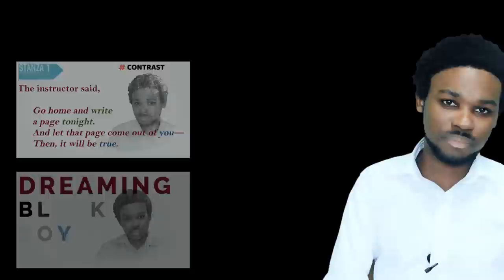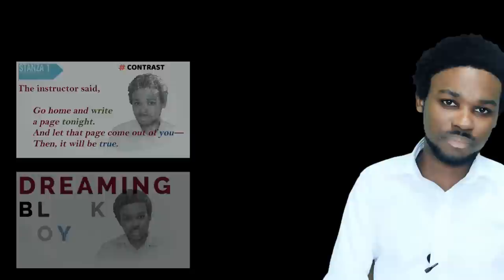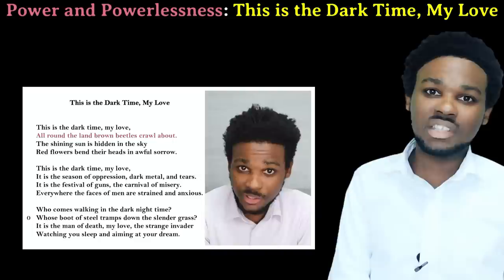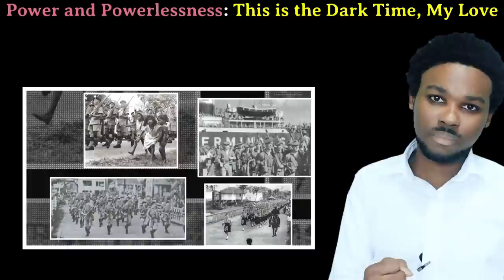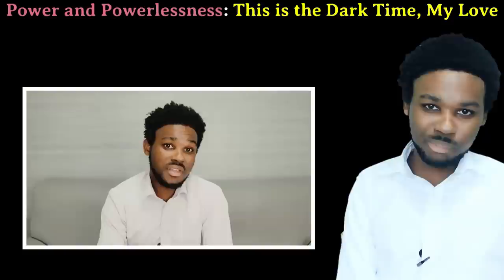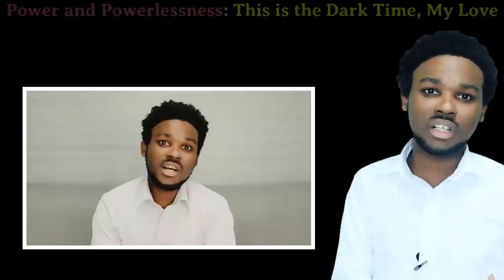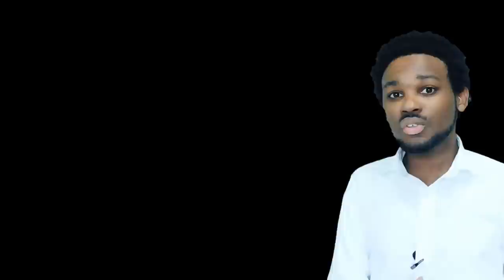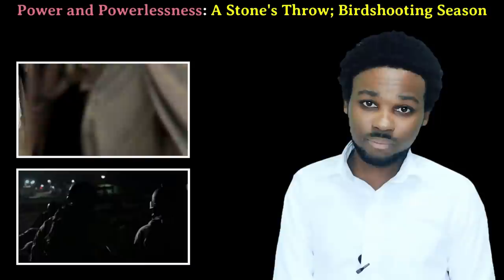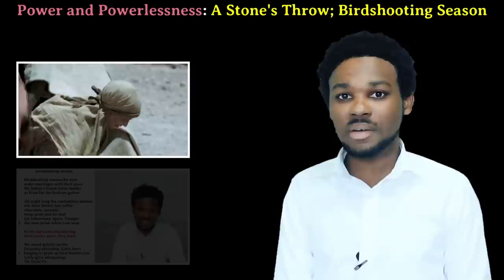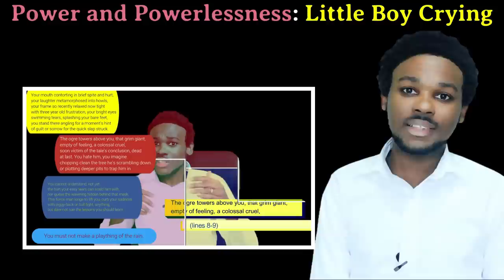In Dreaming Black Boy and Theme for English B, we see how the speakers' race ties into their powerlessness. In This is the Dark Time My Love, the speaker and his entire country, presumably Guyana, seem to be powerless under the fists of their invaders, the oppressors, presumably the British. Even nature seems to be powerless in the face of these armored villains. The power dynamic comes in the form of imperialism — one country exerting dominance over another. In A Stone's Throw and Bird Shooting Season, the women are powerless and overpowered by the men. This is much more pronounced in A Stone's Throw, where the men exert sexual, physical, and even moral dominance over the woman. Even when the woman is empowered by the guru, presumably Jesus, it is a man who gives her power.